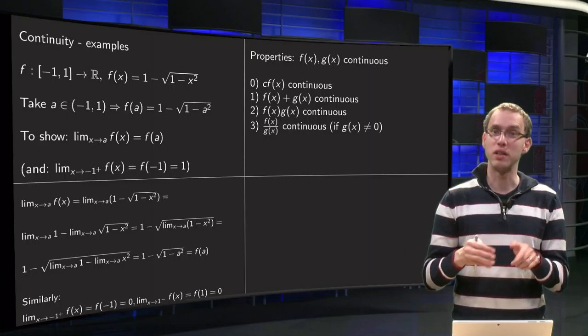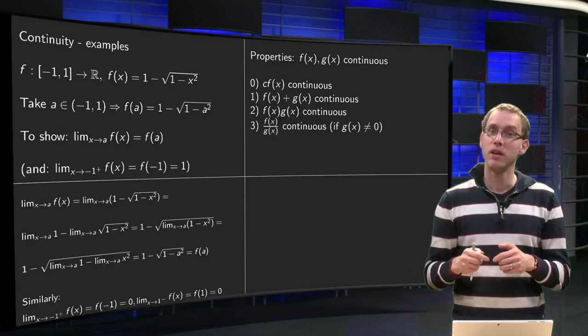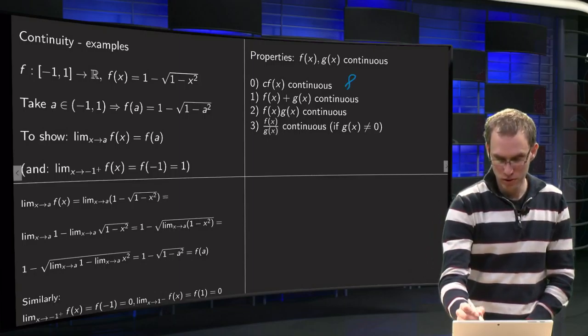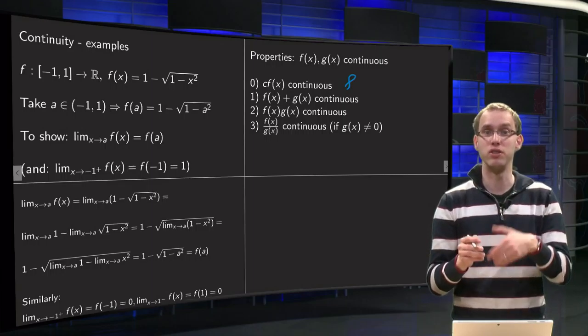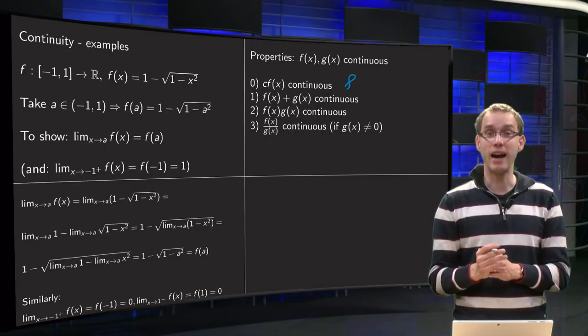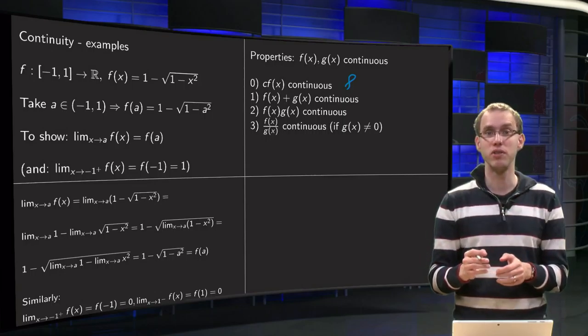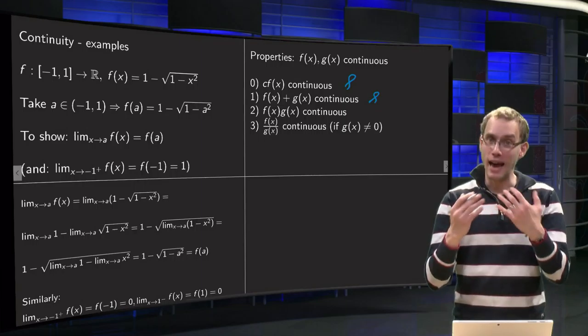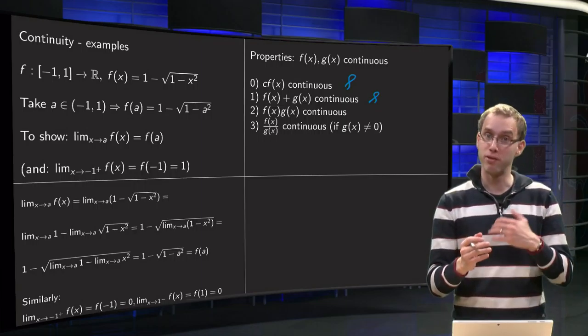So what are some properties of continuous functions? Well, they inherit all properties from our limits. So limit of c times f equals c times limit of f, that is that you can take scalars in front. Rule 0 means that if f is continuous, c times f will be continuous.